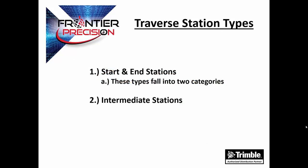A traverse is identified by the following station types: start and end stations, and intermediate stations. Start and end stations fall into two categories. The first is a station setup, such as a station setup or station setup plus, that has been performed over a known point, or a station setup such as a resection that has been performed over an unknown point. In either case, the position of the station is known without any help from other stations in the traverse. The orientation of the station is also known independent of the traverse.